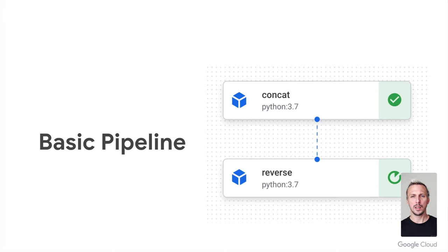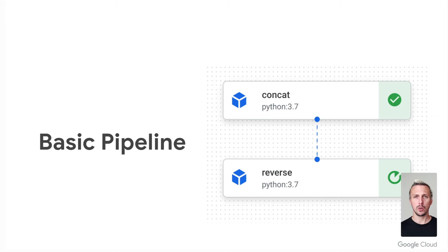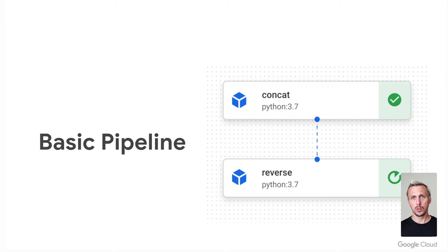Things are simple until you make them complicated. And exactly because of that, we start with the most simple pipeline possible — just two components doing a bit of string manipulation, without digging too deep into the details yet. If you're already familiar with that, don't worry. We get to the best practices and deep-dive topics very soon.